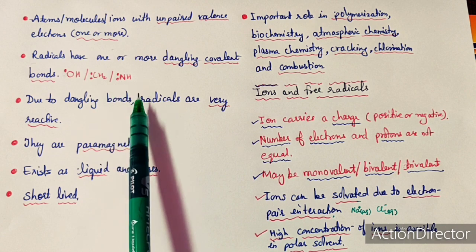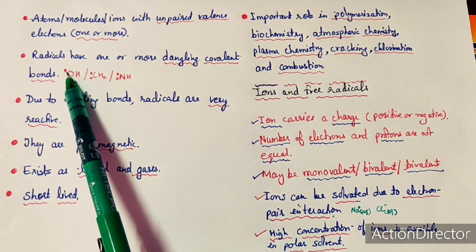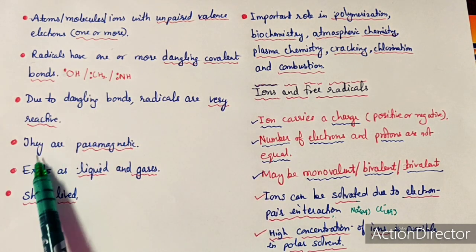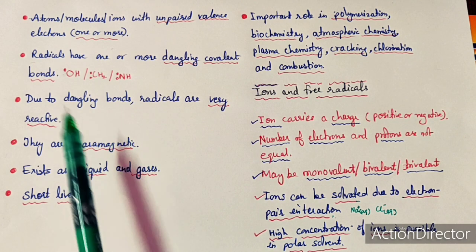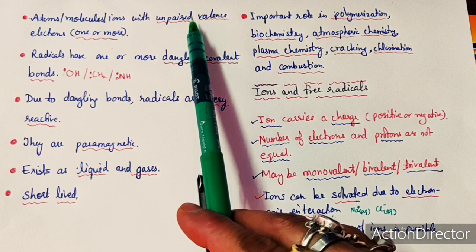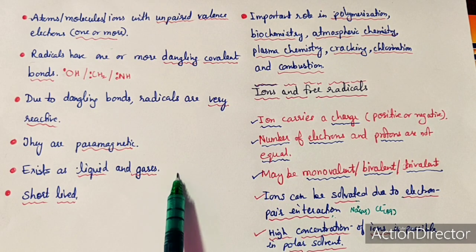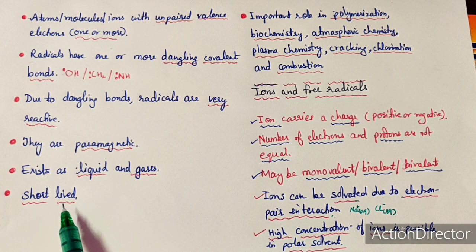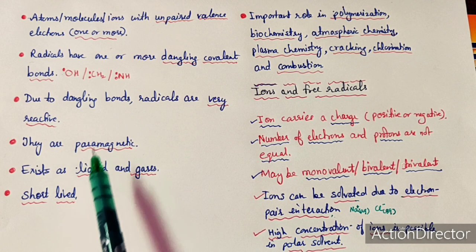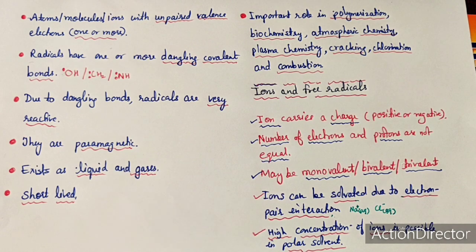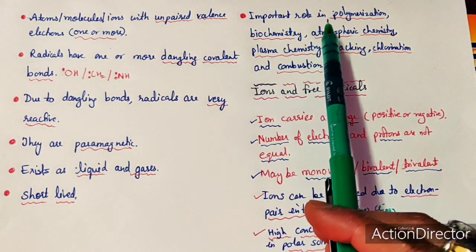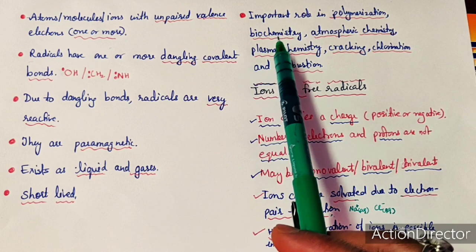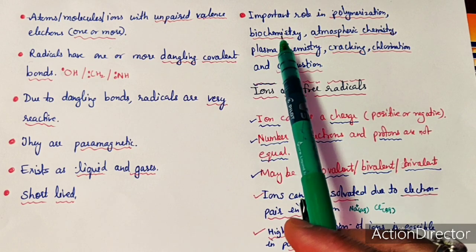Due to these dangling bonds, free radicals are very reactive — through the dangling bond they can easily form a covalent bond with another free radical. They are paramagnetic in nature because they have unpaired electrons in their valence shell. They exist in liquid and gaseous phases. Most free radicals are short-lived, while a few are long-lived. They play important roles in polymerization and biochemistry, as many free radicals are generated in our body.